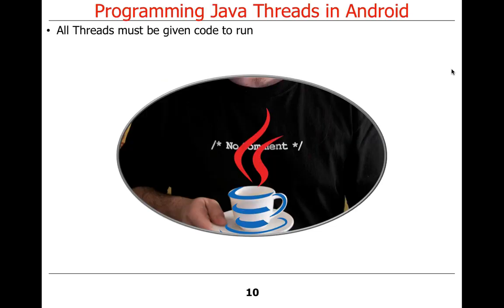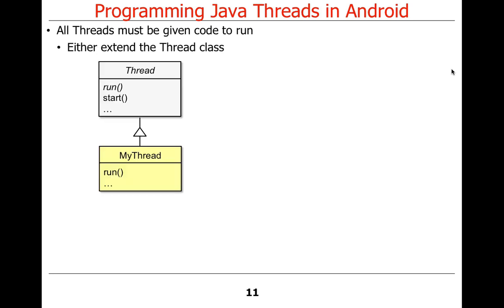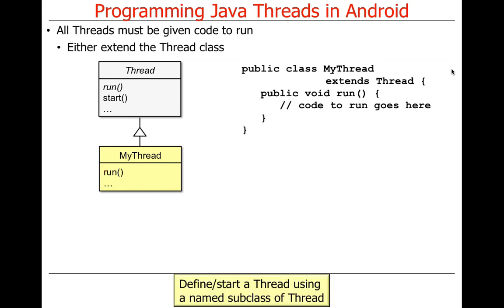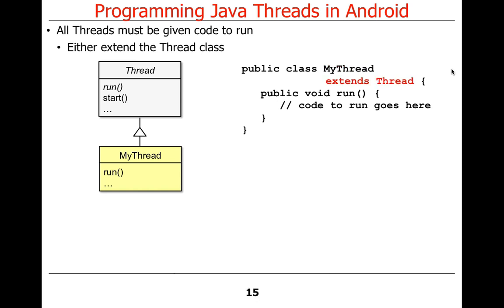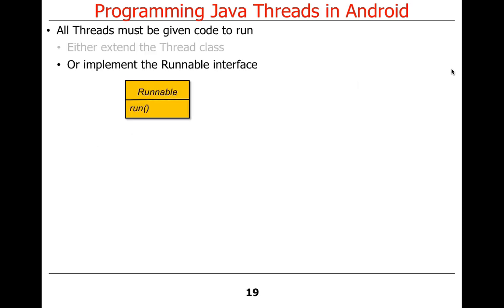Let's talk about how you program Java threads. In order to program a Java thread, you have to give it some code to run. One way, which is very simple, is to extend the Thread class. You extend it and override the run method. Here's a simple example using a named subclass: 'MyThread' extends Thread and defines the run method. Then you make a new instance of MyThread and start it, and magic happens — the thread begins executing.